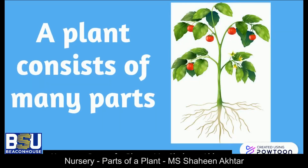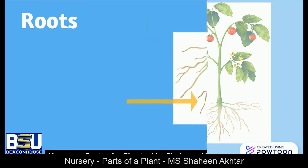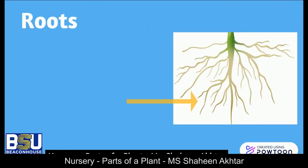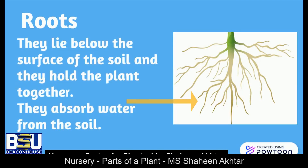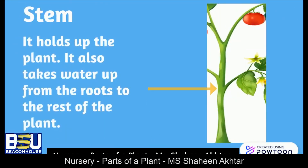A plant consists of many parts: roots, stem, leaves, fruits, flowers, and bud. Roots — have you ever seen roots? They lie below the surface of the soil and they hold the plant together. They absorb water from the soil.